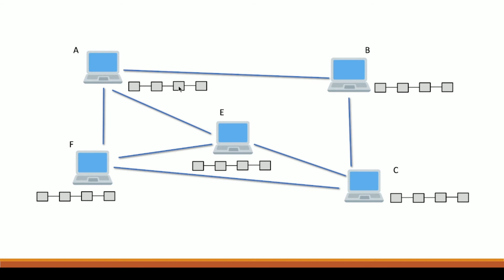A is holding a blockchain, and the exact copy is held by B — A and B are carrying the same blockchain. C, E, and F are also carrying the same blockchain. All of these people have the exact copy of the blockchain.